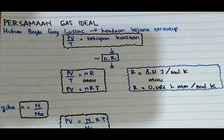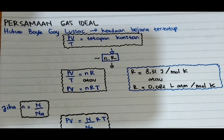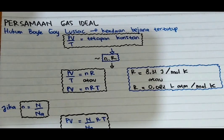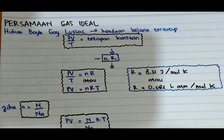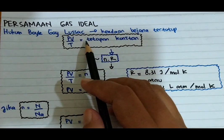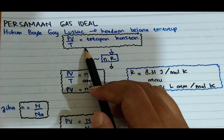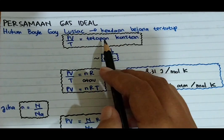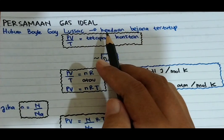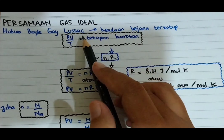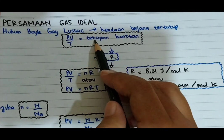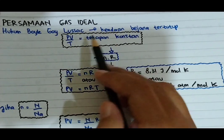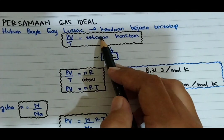Kemarin kita sudah tahu bahwa di dalam gas ideal terdapat sebuah hukum dari Boyle-Gay Lussac, di mana hukum ini berlaku ketika ada keadaan di dalam sebuah bejana yang tertutup. Dari situ kita tahu bahwa PV/T merupakan sebuah tetapan konstan. Jadi ketika ada dua keadaan bejana yang tertutup, kita bisa menggunakan P1V1/T1 sama dengan P2V2/T2, atau PV/T sama dengan tetapan konstan.